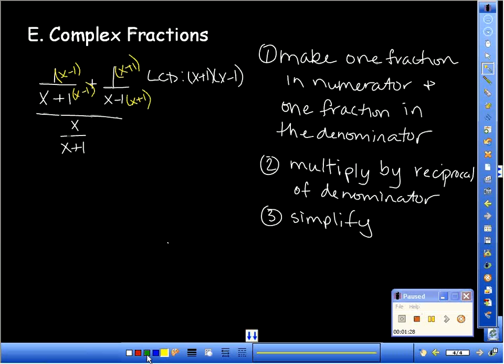And I get X minus one plus X plus one over X plus one times X minus one. Okay, I'm writing it as one fraction, skipping the step where I write the two separate fractions. All over X over X plus one.